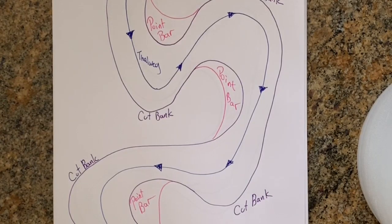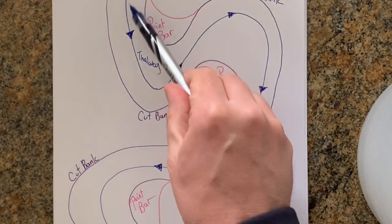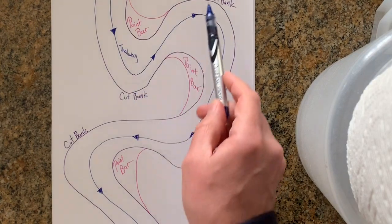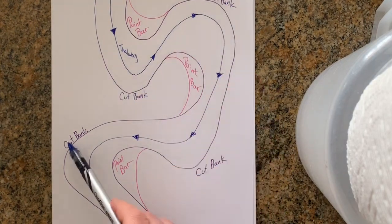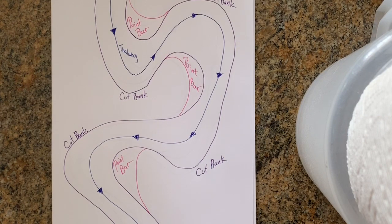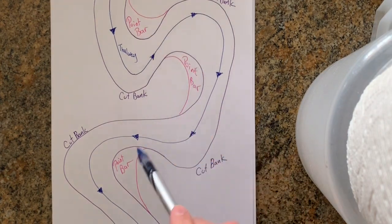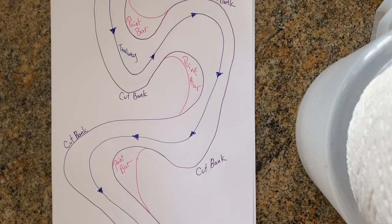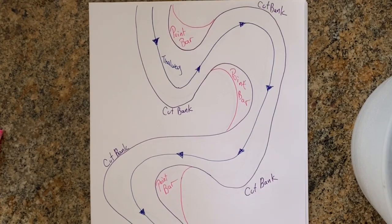In this picture you can see the thalweg, the cut banks — where the river embankment is being cut away or eroded — and the point bars, which are areas where sediment is being deposited because the water is moving slower in those areas.